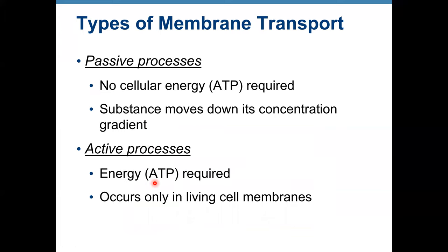When molecules move across a cell membrane, this is called transport. There are two types of transport: passive and active transport. Passive transport does not use ATP energy and substances move down their concentration gradient. Active transport requires ATP; it can only occur in living cell membranes because if the cell is not alive, we don't have a supply of ATP. Active transport is movement against the concentration gradient.